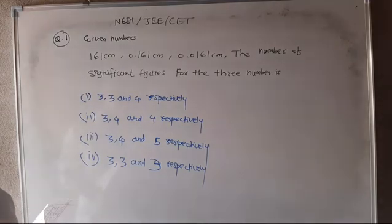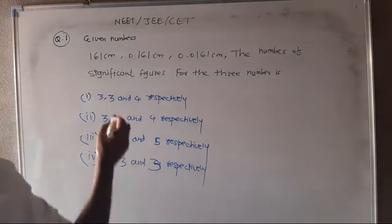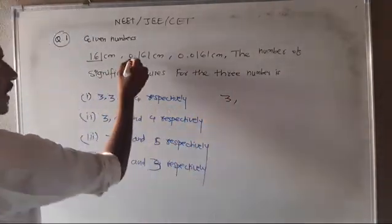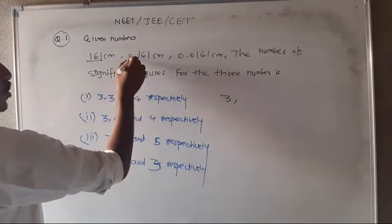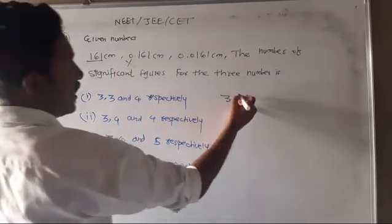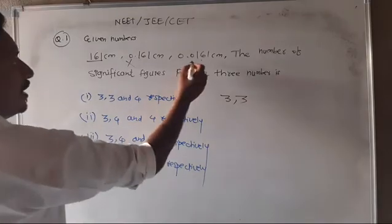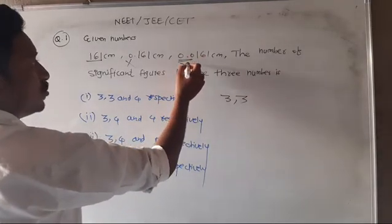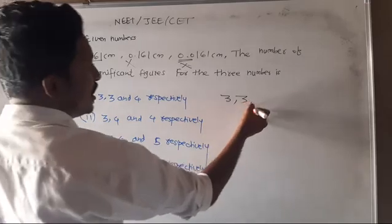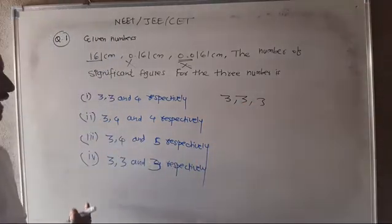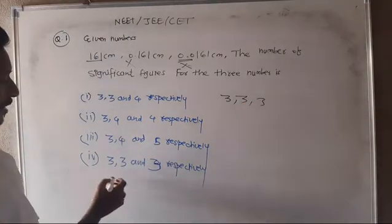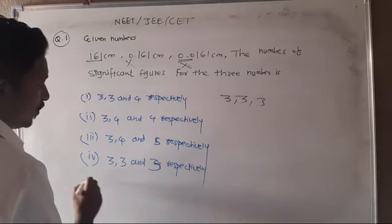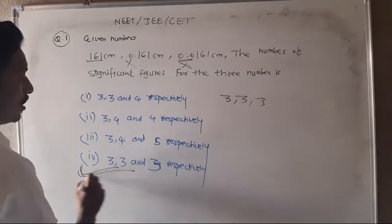Students, ask: how many significant figures are in this number? Count: 1, 3, 6 — that is 3 significant figures. Another example: 3, 4, 3 — the answer is 4 significant figures. The correct number is 4.